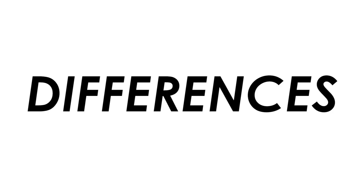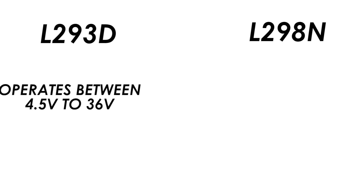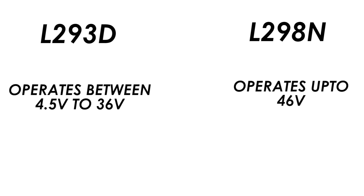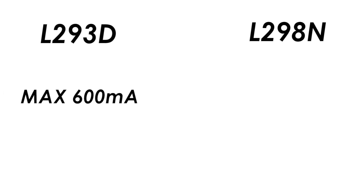The basic differences between an L293D and an L298N motor driver are: the L293D operates between 4.5 and 36 volts, whereas the L298N can operate up to 46 volts. A maximum of 600 milliamperes of current can be drawn through both channels of an L293D, whereas the L298N can draw up to 2 amperes from both channels.